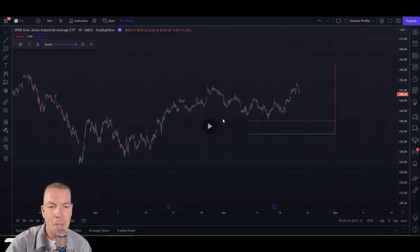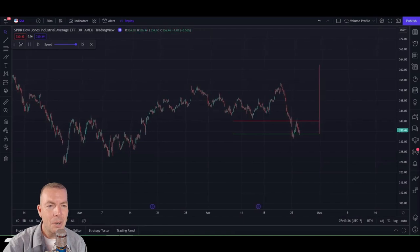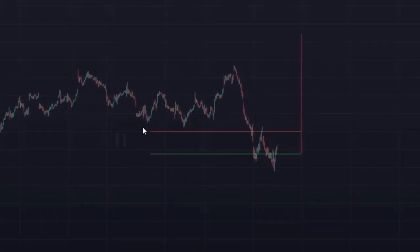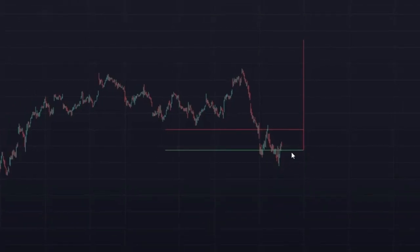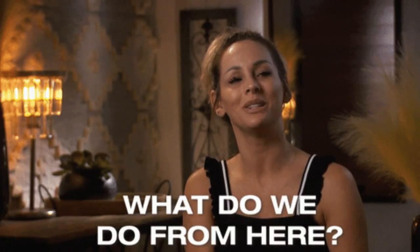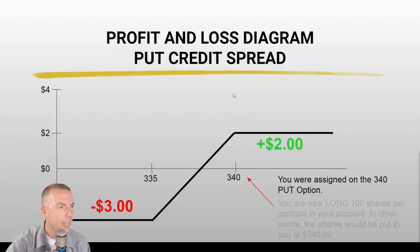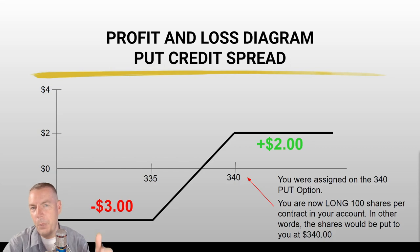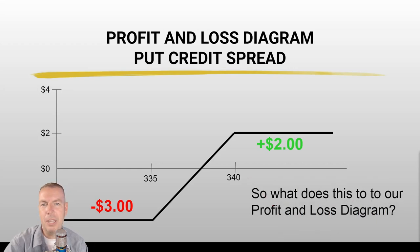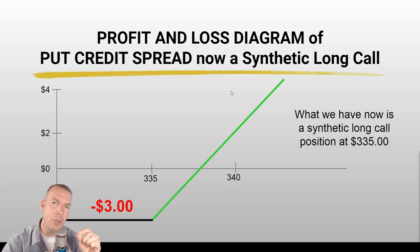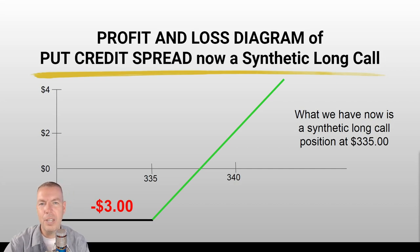As the trade marched on it continued to go down, and right here getting close to expiration, boom — we got assigned on our contract. You can see we're below that 340 put but still above that 335 put. So we were assigned on that 340 put option. You're now long 100 shares per contract in your account. In other words the shares were put to you and put into your account at $340. That 340 put option contract is now gone — it's vanished from our account and has turned into stock, leaving us with basically a synthetic long call position.